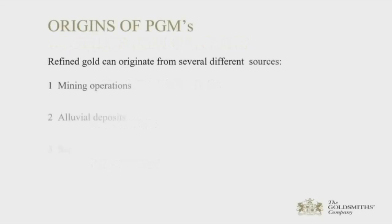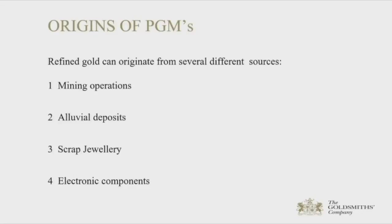So, why would samples contain any PGMs? Well, refined gold can originate from several different sources: deep mines, alluvial deposits, scrap jewellery, electronic scrap — all of which will contain other elements such as silver, copper, lead, zinc, iron, nickel, as well as PGMs.